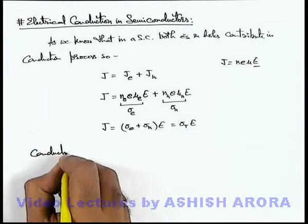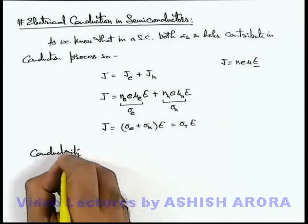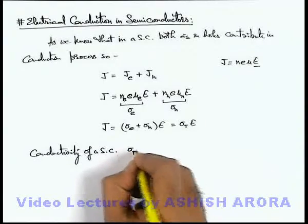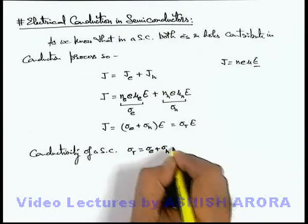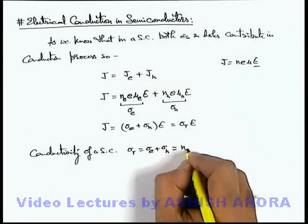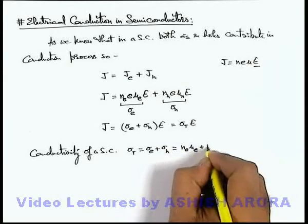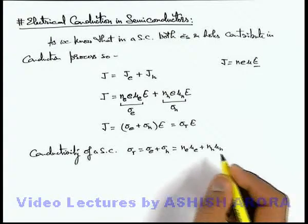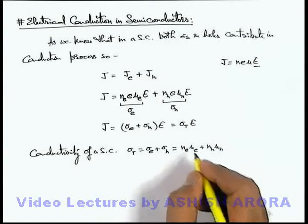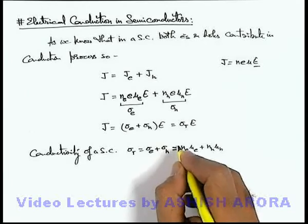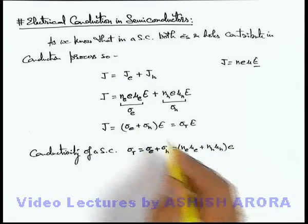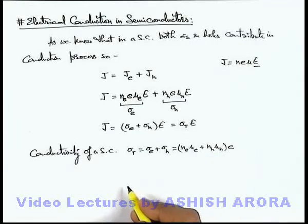of a semiconductor can be written as σ_total is σ_e plus σ_h, which can be written as n_e·μ_e plus n_h·μ_h for different kind of numerical calculations. We can use it, and this is multiplied by the charge of electron if we substitute the value of σ_e and σ_h here.